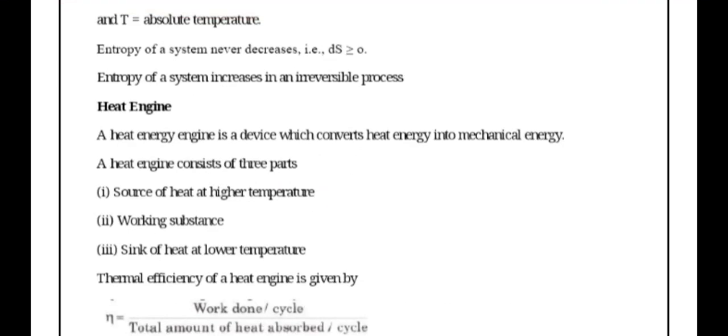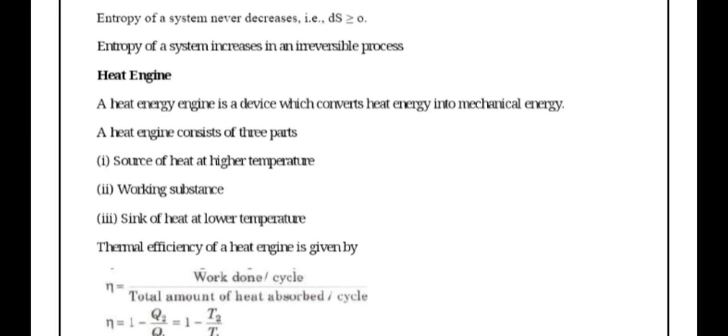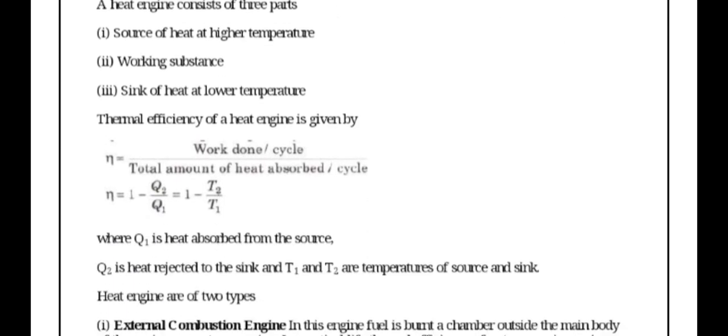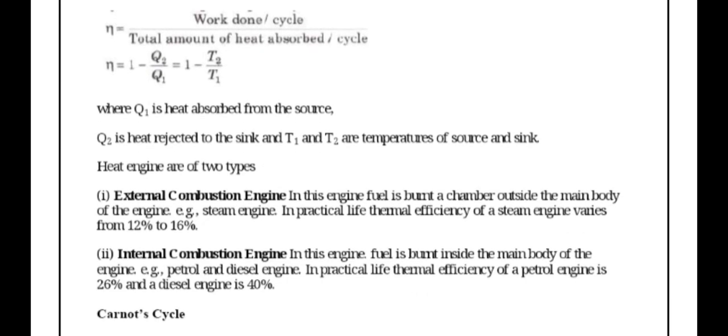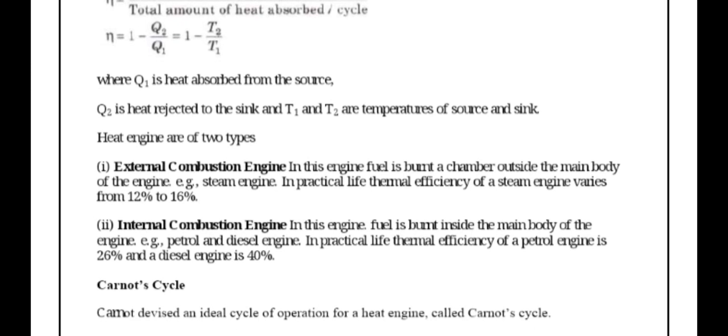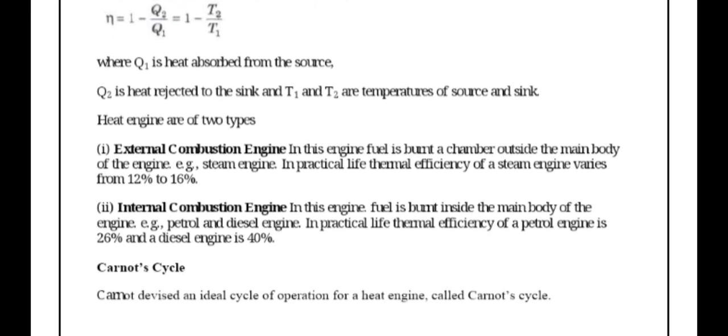A heat engine consists of three parts: source of heat at high temperature, working substance, and sink of heat at low temperature. The efficiency η equals work done per cycle divided by total heat absorbed, which equals 1 minus T2/T1. Q1 is heat absorbed from source, Q2 is heat rejected to sink, and T1 and T2 are temperatures of source and sink.